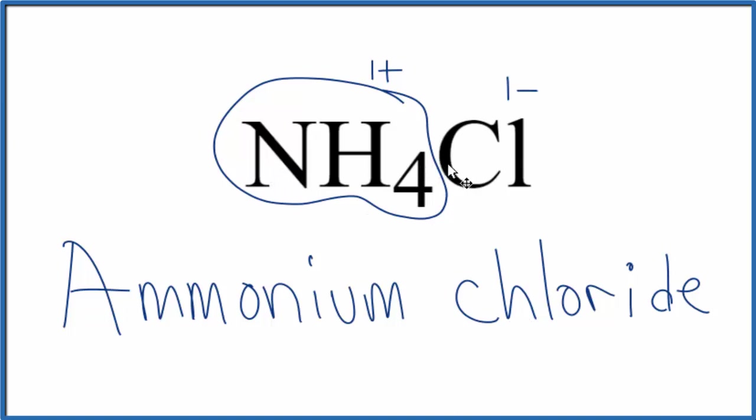Even though these are all nonmetals, this is still considered an ionic compound because we have this ammonium ion here with the 1 plus ionic charge and then the chloride ion. So that's an ionic compound because these two ions are attracted to each other and they form the ionic bond.